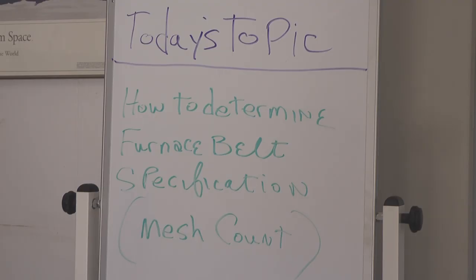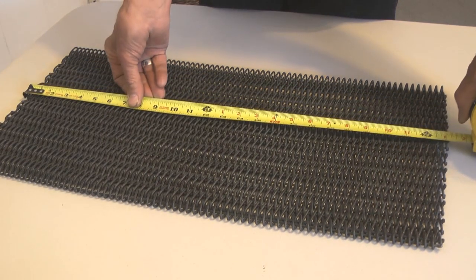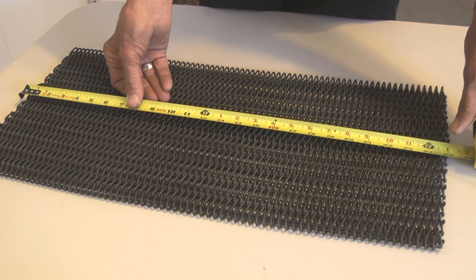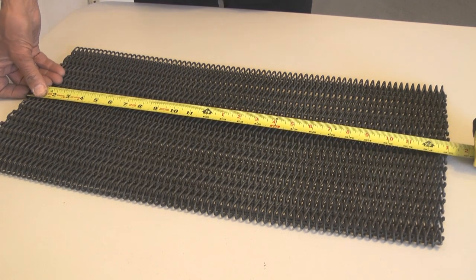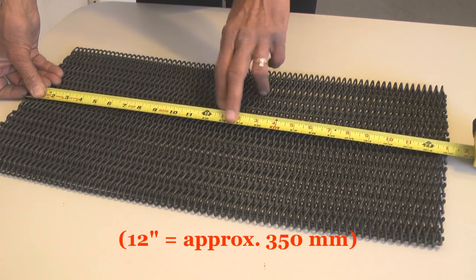Today's topic is how to determine the furnace belt specification, sometimes called the mesh count. The first number in the belt specification is the number of spirals that occur across the belt, perpendicular to belt travel, across the belt in 12 inches.